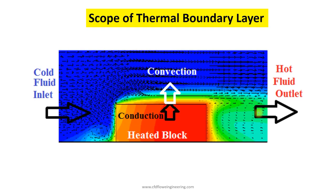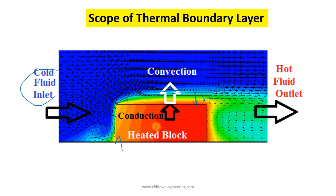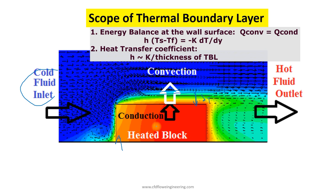The scope of thermal boundary layer was discussed briefly. When cold or hot fluid flows over a block, a thermal boundary layer is formed over the block. Here you can see the thermal boundary layer over the block, and delta T is the thickness of the thermal boundary layer. When air flows over a heated or cold surface, there is a formation of thermal boundary layer. It is important to understand what parameters affect the thermal boundary layer.